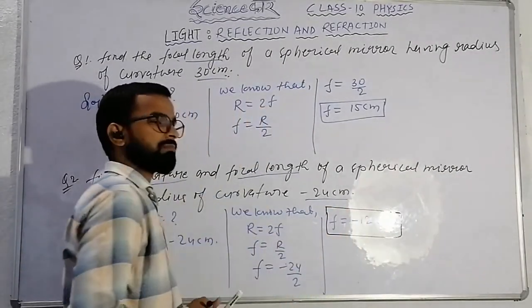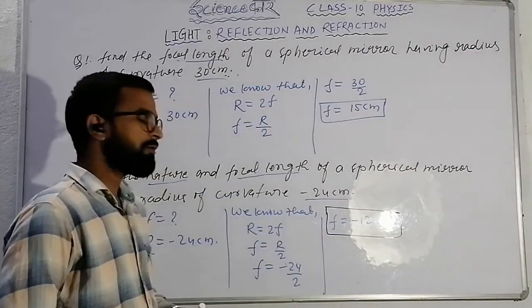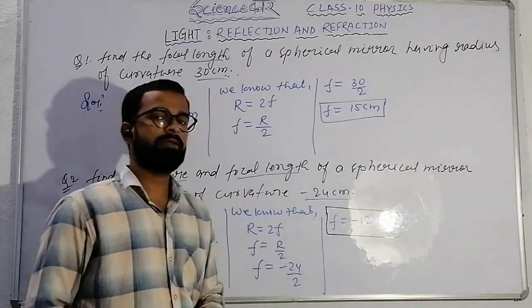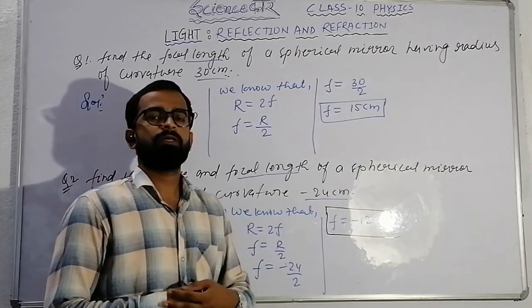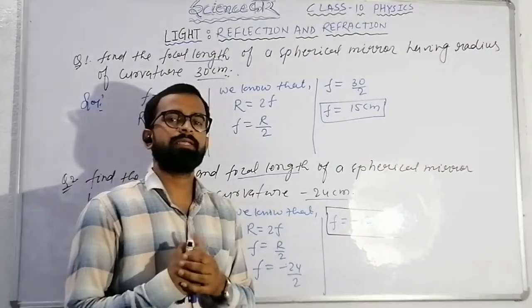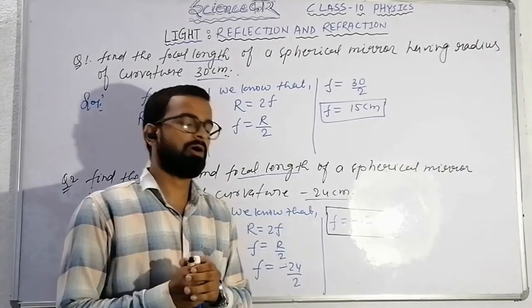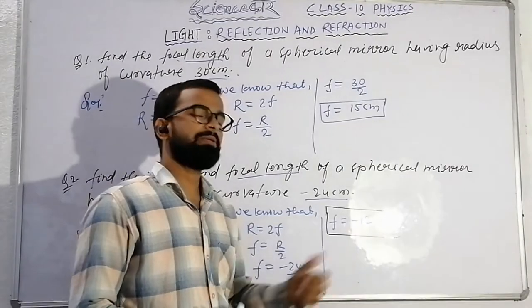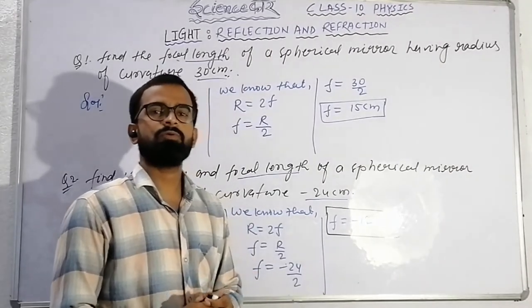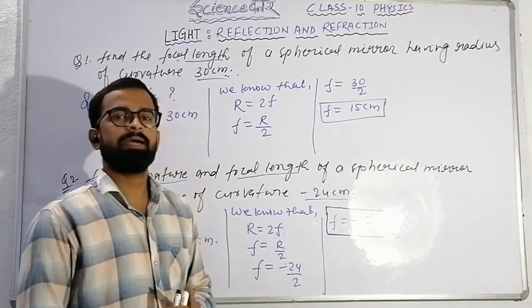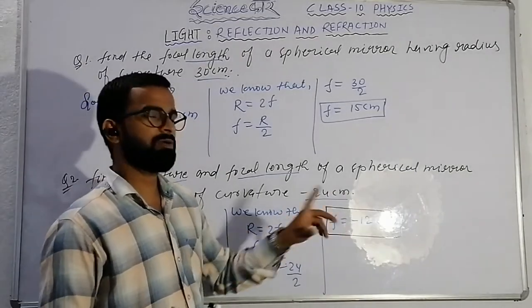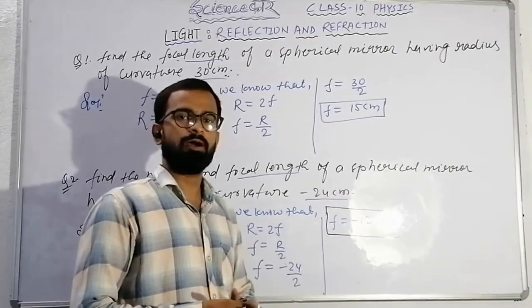The nature of the mirror depends on the sign of the focal length. If the sign is positive, the mirror is a convex mirror. If the sign is negative, the mirror is a concave mirror. Since f is minus 12 cm, this is a concave mirror.